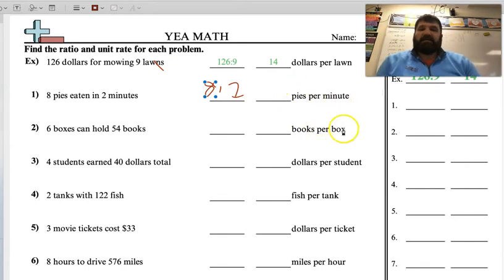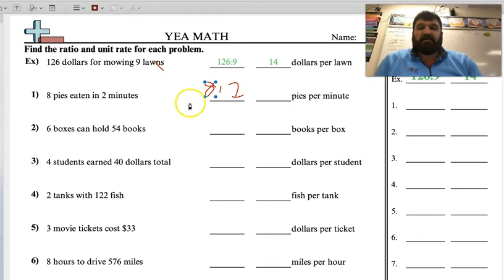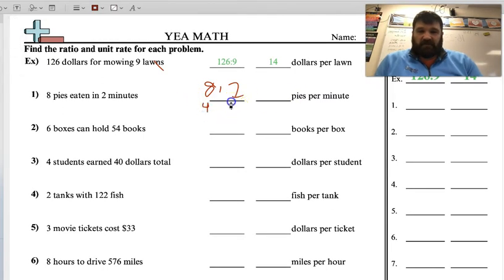So then that means how many pies per minute? Well, if it's 8 pies in 2 minutes, how can we break that down? You divide both by 2, and you end up with 4 to 1, so 4 pies in 1 minute. See how that works?